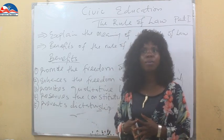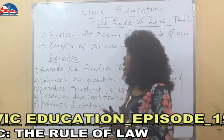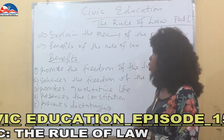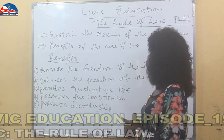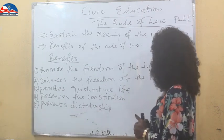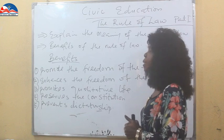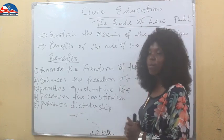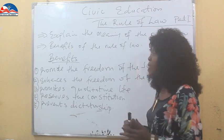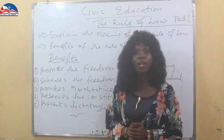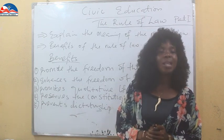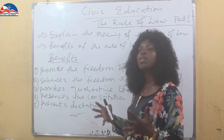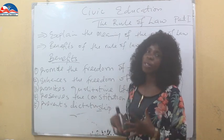The rule of law has been very helpful in many ways. To summarize, the five benefits are: promote freedom of the judiciary, enhance freedom of the individual, promote qualitative life for the citizenry, preserve the constitution of the nation, and prevent dictatorship from those in governance who want to be dictators. We have now seen what the rule of law is and its benefits.